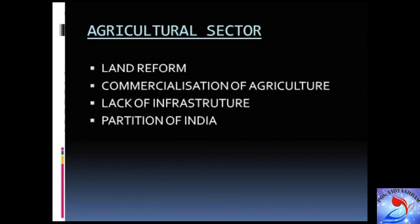The first is land reform. Indian agriculture was primitive and stagnant during the colonial period. The main cause of stagnation was the land tenure system. The British government in India introduced a new land tenure system known as land reform.